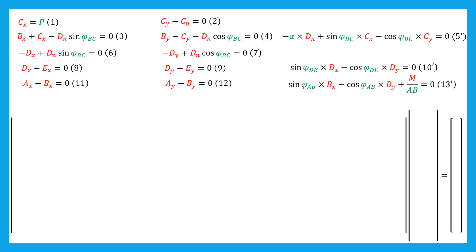First, we need to order the unknowns in the vector of unknowns. The chosen order is: AX, BX, CX, DX, EX, AY, BY, CY, DY, EY, CN, DN, and M/AB. We have considered M/AB in the vector of unknowns so that the vector of unknowns is homogeneous to a force and the coefficients of the matrix will be unitless.